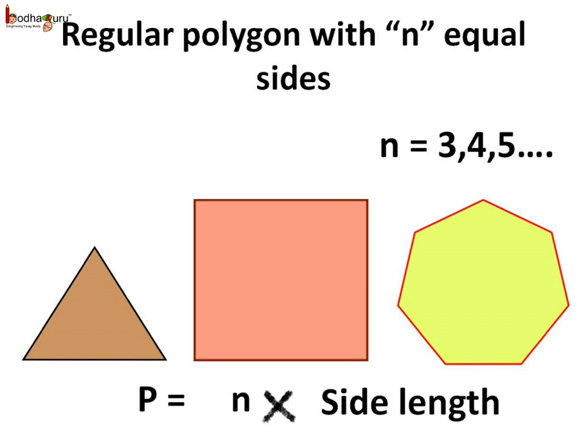So what did we see? Any regular polygon with n equal sides — where n can be 3, 4, 5, and so on; it cannot be 2 or less because then we won't get a closed figure — the perimeter of all these regular polygons with n equal sides will be equal to n times the side length. This is the generalized formula for a regular polygon with n equal sides: P = n × side length.